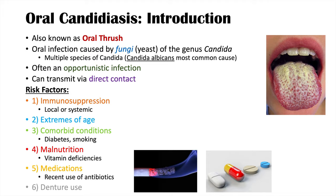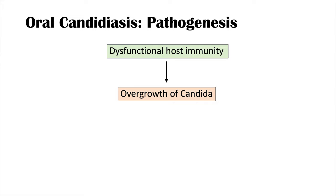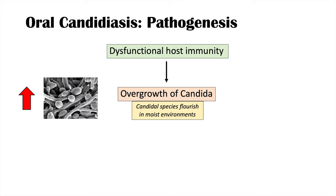The pathogenesis of oral candidiasis starts with dysfunctional host immunity. Normally, commensal bacteria and the immune system keep Candida in check. But with any of those risk factors, immune function is reduced locally or systemically, leading to an overgrowth of Candida. Candidal species flourish in moist environments like the mouth, and once they reach sufficient quantity they form a pseudomembrane, adhering to the tongue and becoming very difficult to remove.